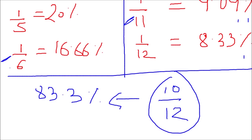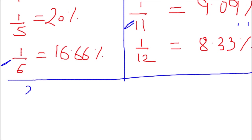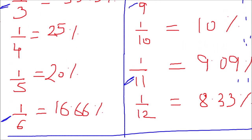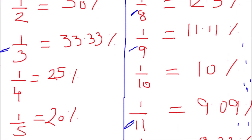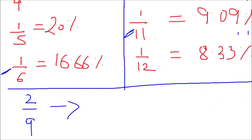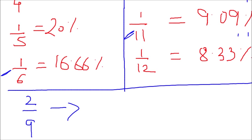Let me take another example. Suppose the ratio is 2/9 and you have to find the corresponding percentage. The denominator is 9, so I jump to 1/9, which is 11.11%. It's 2/9, so it's 2 × 11.11% = 22.22%. As simple as that.